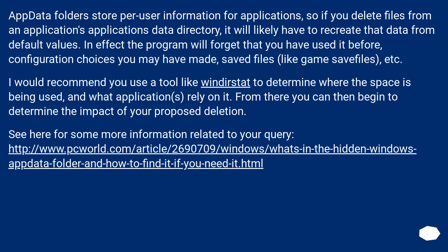AppData folders store per-user information for applications. So if you delete files from an application's AppData directory, it will likely have to recreate that data from default values. In effect, the program will forget that you have used it before — configuration choices you may have made, save files like game save files, etc.